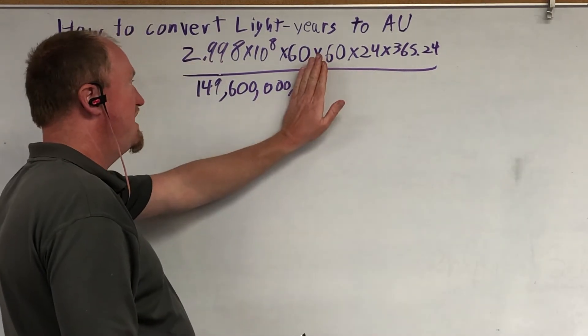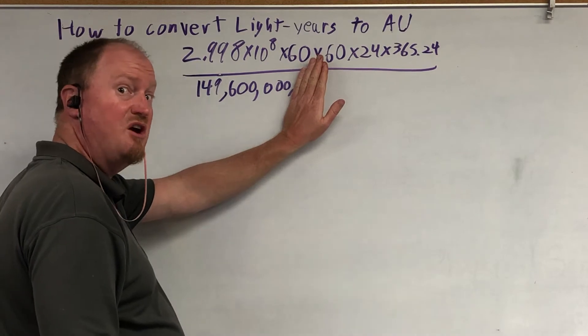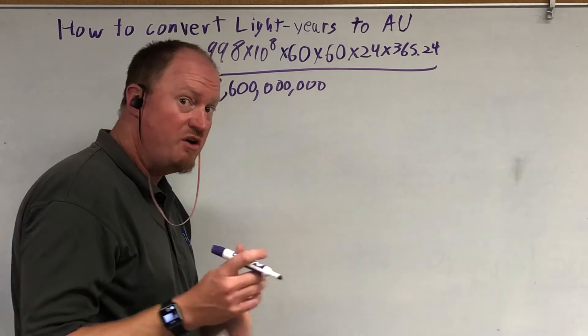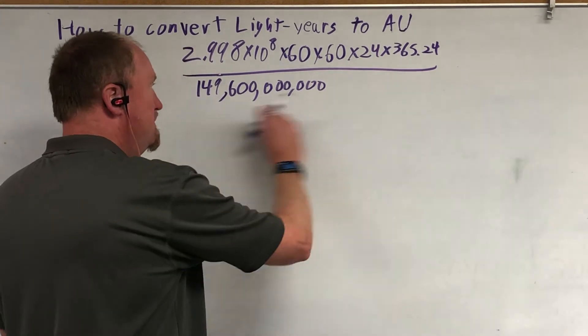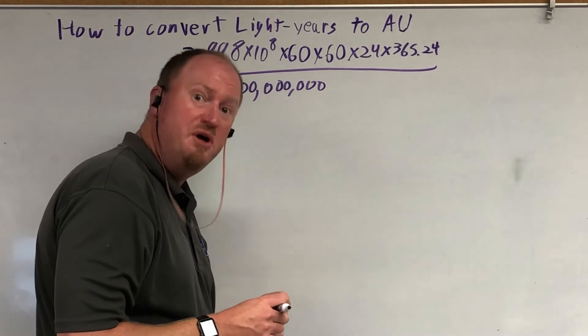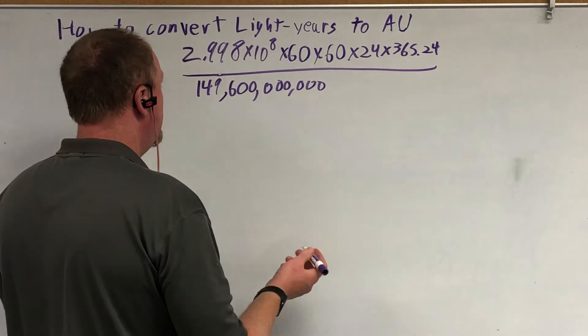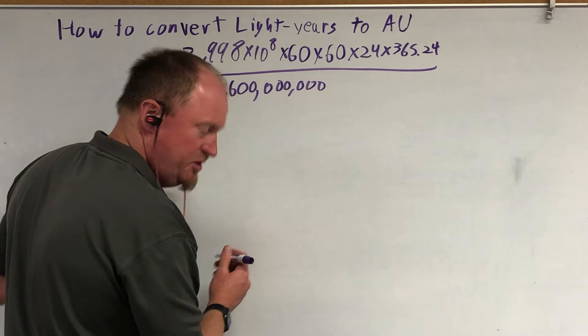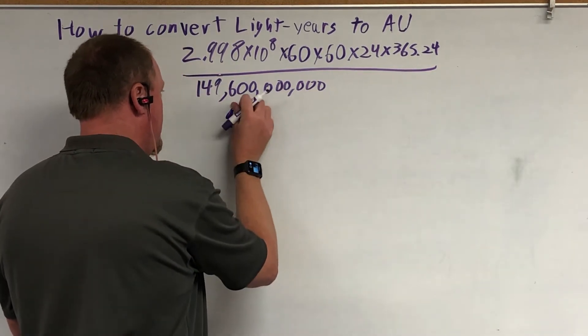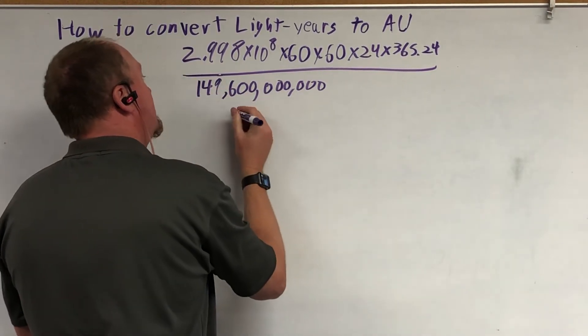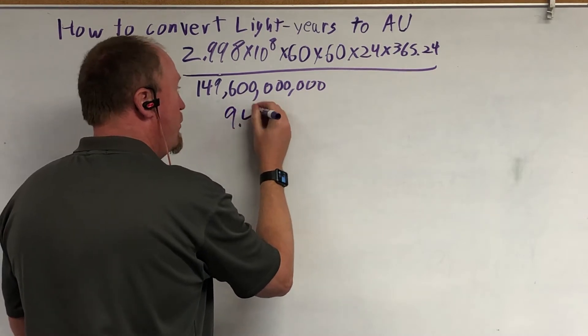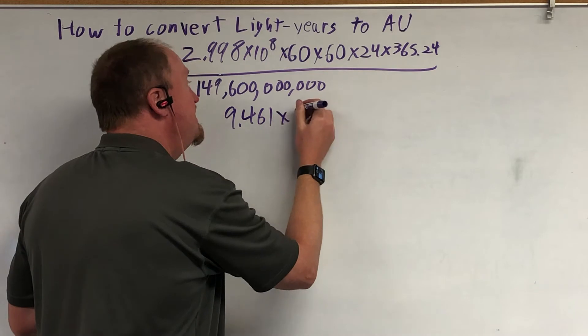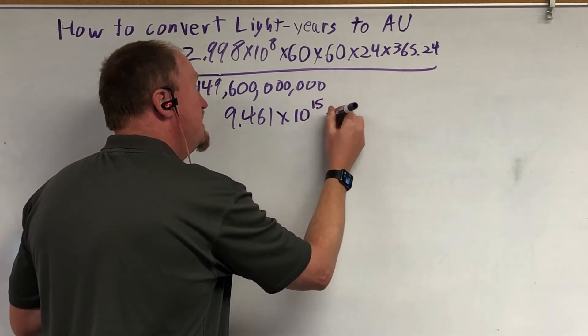You'll often hear people say 150 million kilometers, but since the top is in meters, we've got to keep the bottom in meters so that we don't have problems with units. So 149 billion meters. This basically gives you that a light year is 9.461 times 10 to the 15 meters.